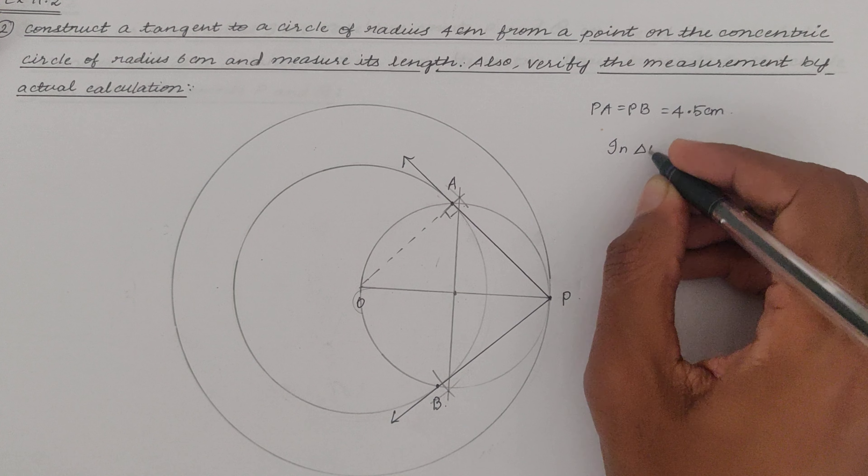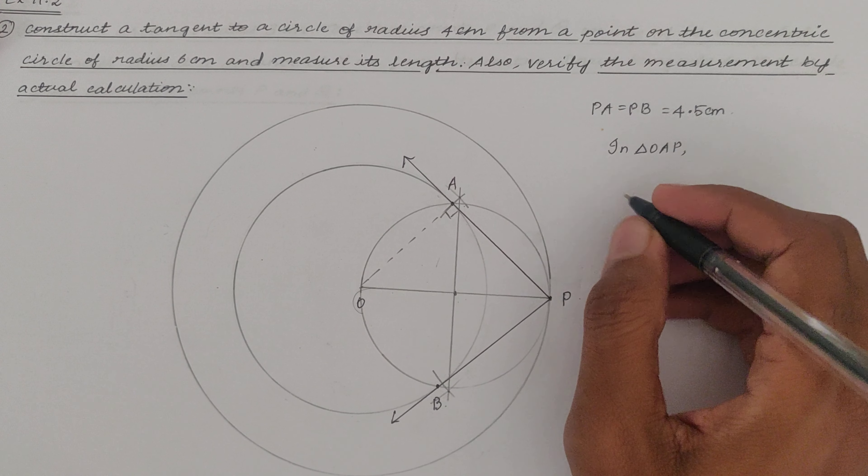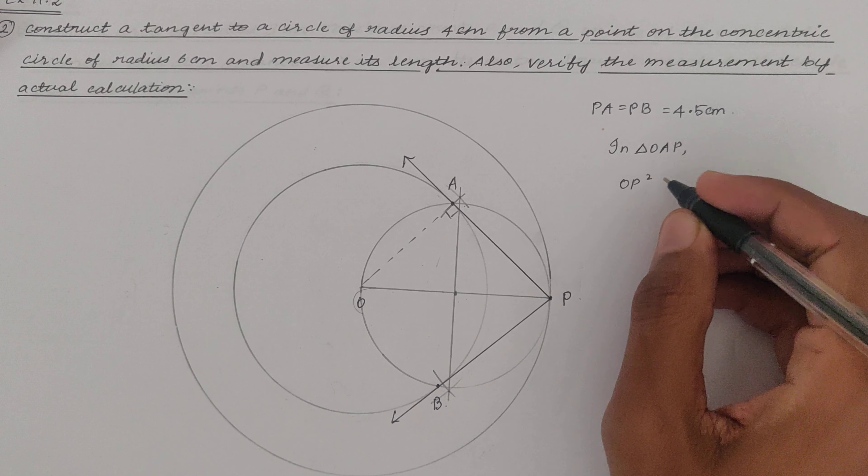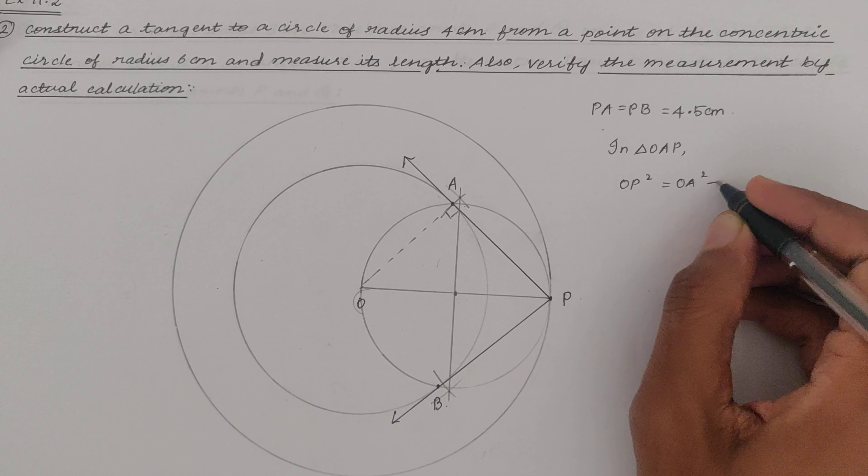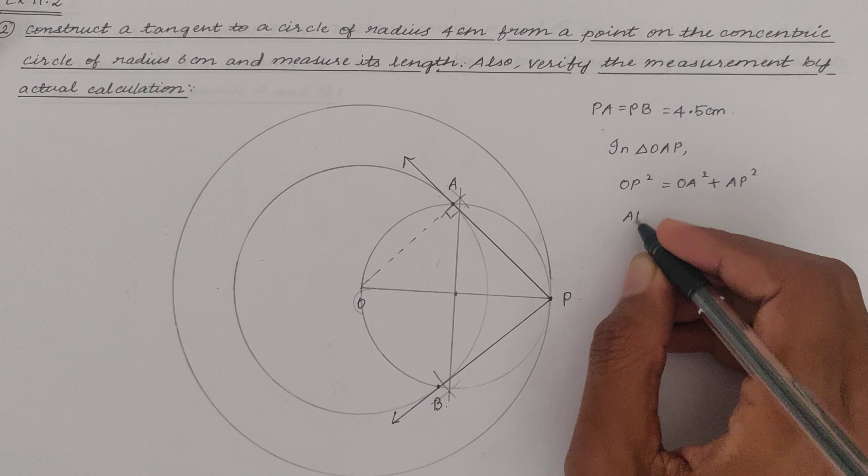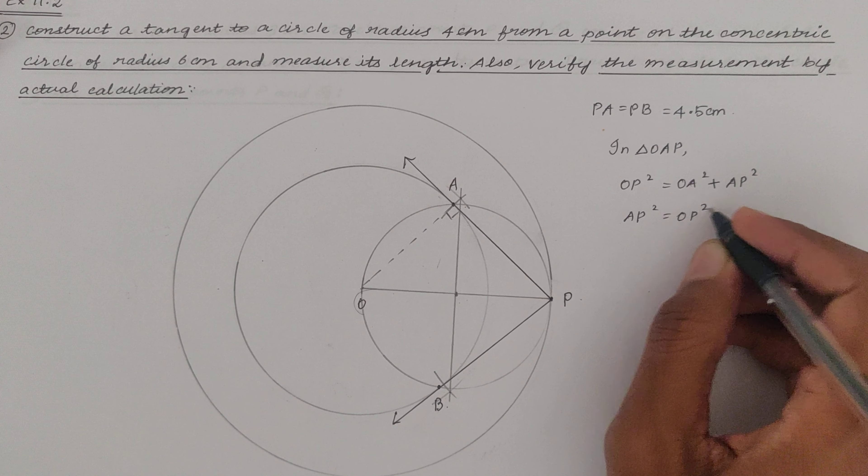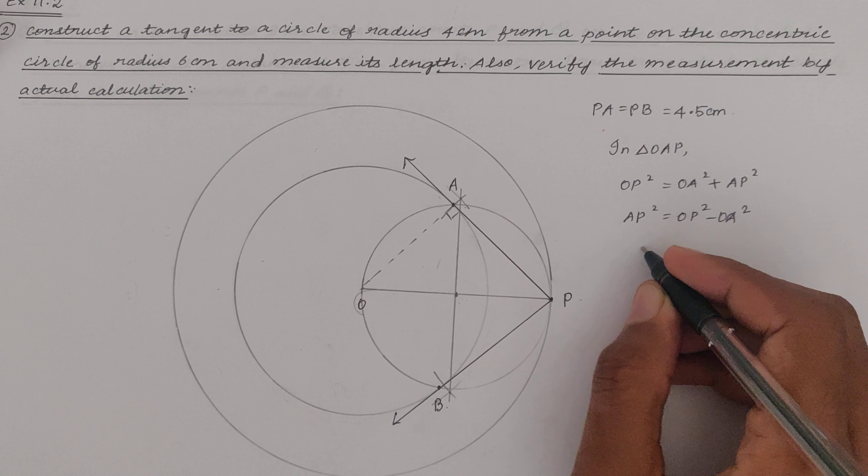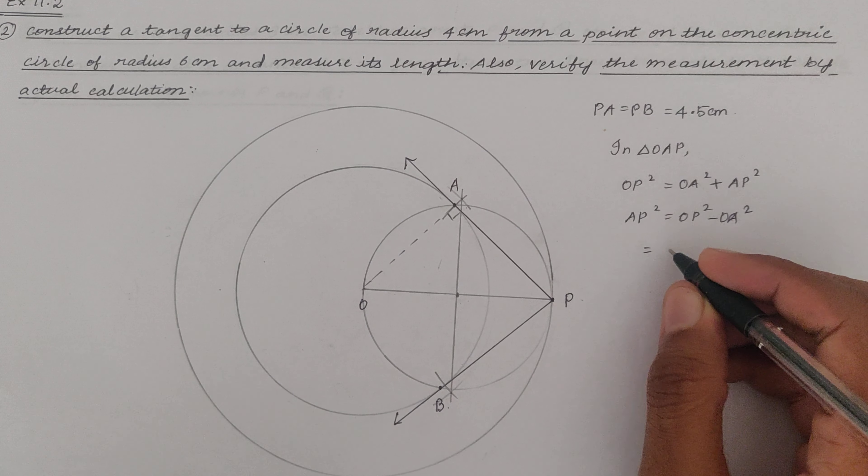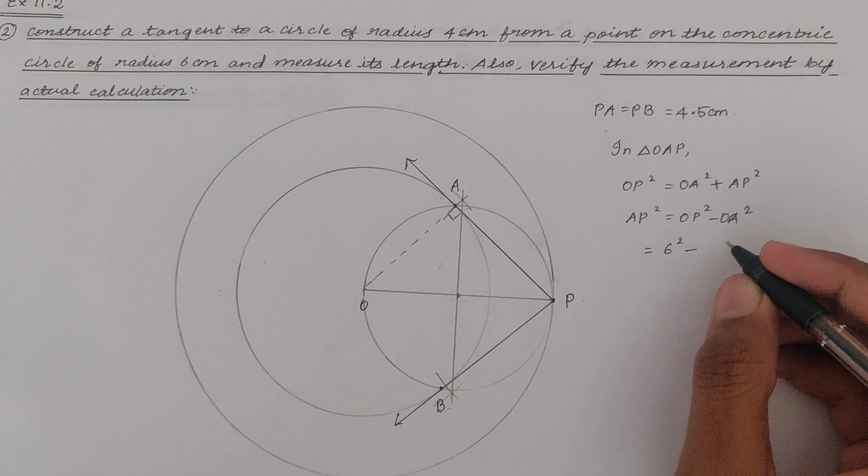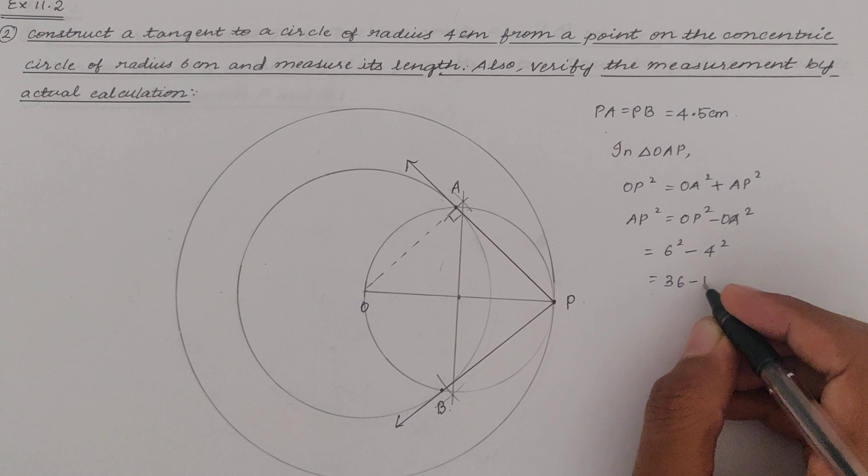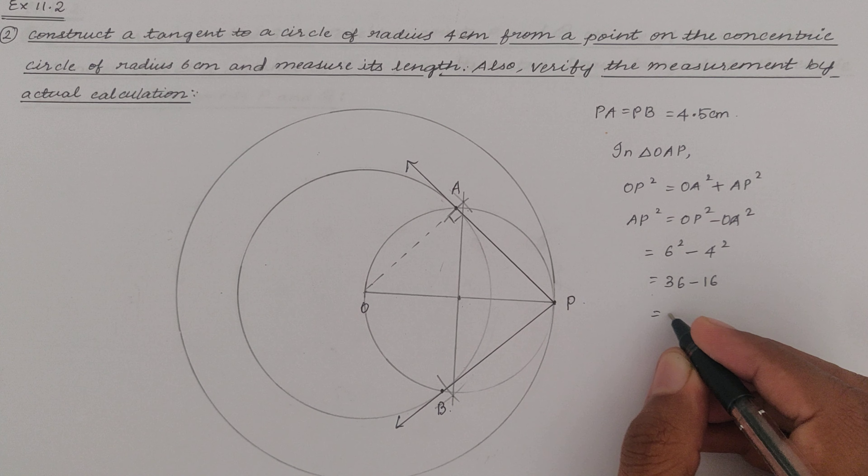Now in triangle OAP, we know that OP square, that is the hypotenuse which is opposite to the right angle, will be equal to sum of the squares of the other two sides that is OA square plus AP square. Now from this AP square will be equal to OP square minus OA square. So we know that OP is 6 because that is the radius of the outer circle. So 6 square minus OA is 4, that is the radius of the inner circle. So you will be getting 36 minus 16 which will be 20.